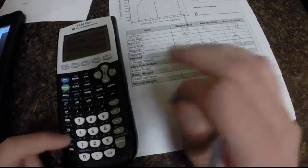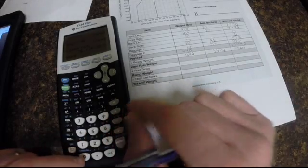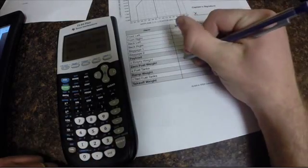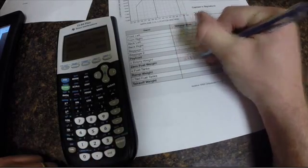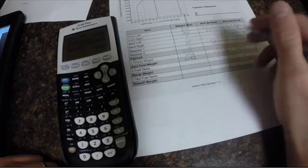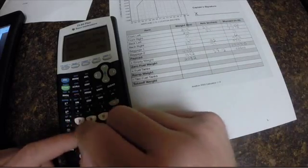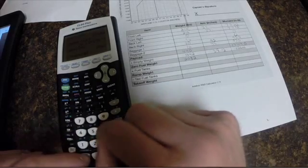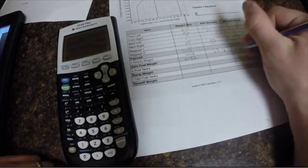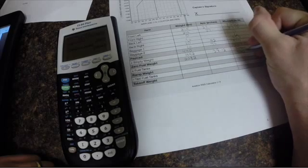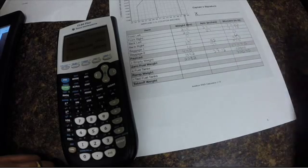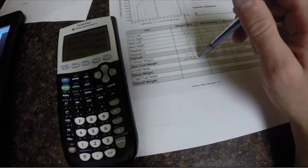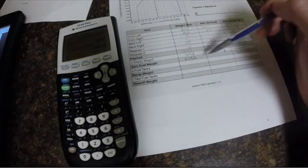So then you add that 440 plus 1,642, which gives you 2,082. And then 17,440 plus 62,600 gives you 80,040.